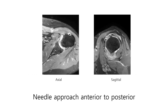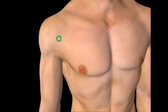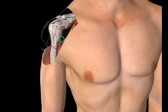I can approach the inferior anterior capsule via the anterior route. I ask the patient to lie supine and externally rotate the arms as much as possible. My needle approaches from the anterior deltoid region directly posteriorly. After passing through the skin, subcutaneous tissue, and the muscle layer between the deltoid and coracobrachialis muscle, the needle penetrates the inferior aspect of the subscapularis muscle.